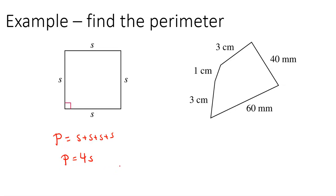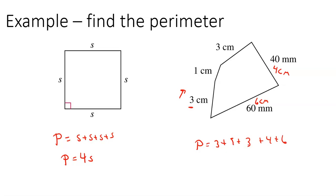This figure has different units — it's got centimeters and millimeters. So we can convert the centimeters to millimeters, or the millimeters to centimeters. This one seems easy enough: take the millimeters, divide by 10, and get centimeters. So this side is four centimeters, and this side is six centimeters. Now add them all together — I've got three plus one plus three plus four plus six. Three plus one is four, plus three is seven, plus ten is 17. So the perimeter is 17 centimeters.